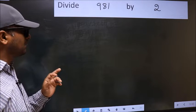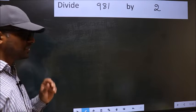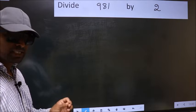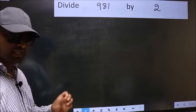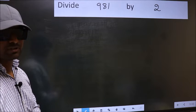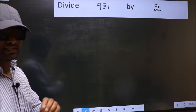Divide 981 by 2. While doing this division, many do this mistake. What is the mistake that they do? I will let you know. But before that, we should frame it in this way.